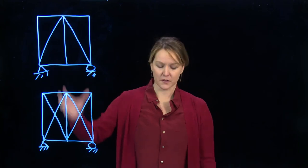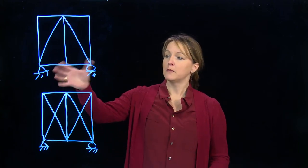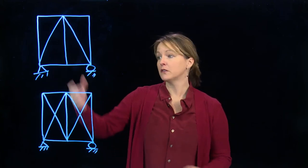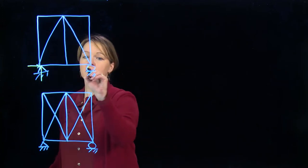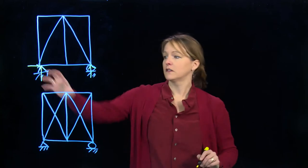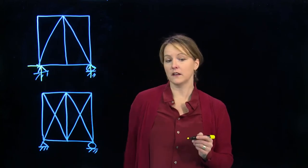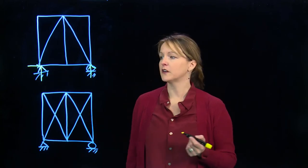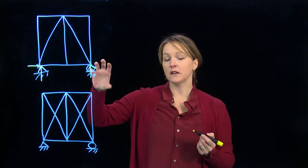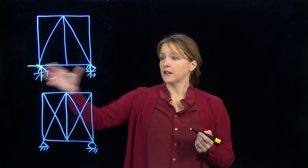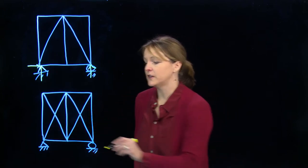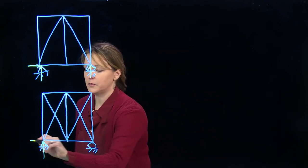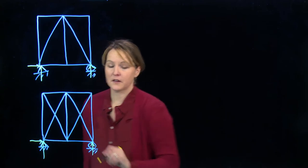When we talked about the supports, we talked a little bit about how many supports we needed to make it stable. And it turns out you need three reaction forces to keep it stable. So two on one side and one on the other is typically what we do for our truss. So we make one side pinned and one a roller. And that's the minimum number of external supports to make this a stable system. So both of these have three external supports, and that's our minimum.